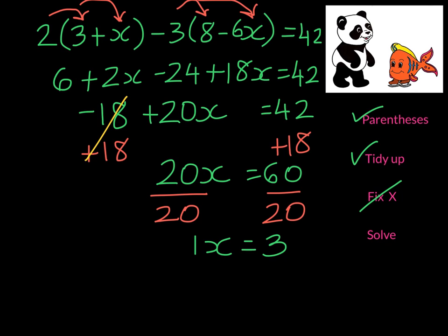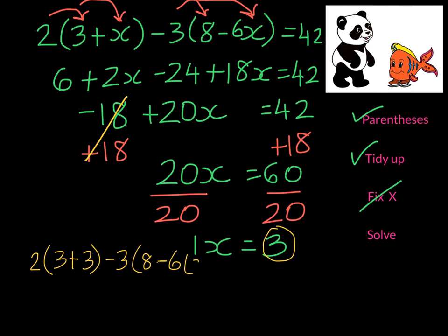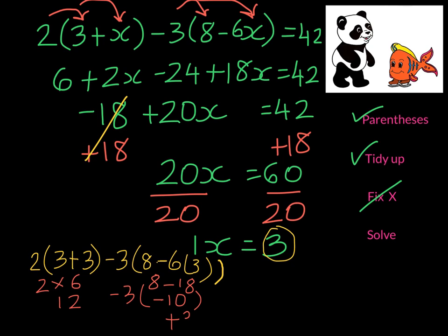Now we're going to check. We're going to take 3 wherever x is. So we have 2 times 3 plus this 3 which was our solution, and I'm going to subtract 3 times 8 minus 6 times this 3. Well, 3 plus 3 gives me 6 — multiply it by 2 so I get 12. Then 6 times 3 gives me 18, but it's negative 18. So 8 minus 18 gives me negative 10, which I multiply by negative 3, giving me positive 30. I add that to the 12, and I get 42, which is the answer. We've solved it correctly.